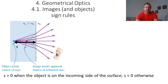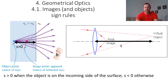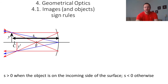In another situation, the object is on the left and the incoming side of the surface is on the left, so s is positive. In one case the object is on the right but the incoming side of the surface is on the left, so s is negative. For another situation the object is on the left and the incoming side of the mirror surface is also on the left, so s is positive.